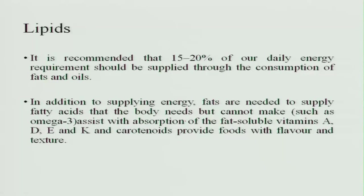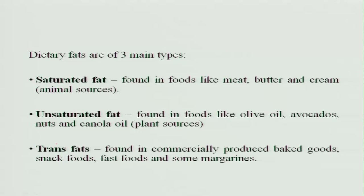Lipids: we need to get 15 to 20 percent of total kilocalories from fat. In addition to supplying energy, fats supply essential fatty acids the body cannot make, like omega-3 or linoleic acid, assist in the absorption of fat-soluble vitamins, and provide foods with flavor and texture. A food without any fat is bland in taste and texture. Dietary fats are of 3 types: saturated fats from animal sources, unsaturated fats from plant sources, and trans fatty acids found in commercially produced baked goods or where fat is continuously heated multiple times.